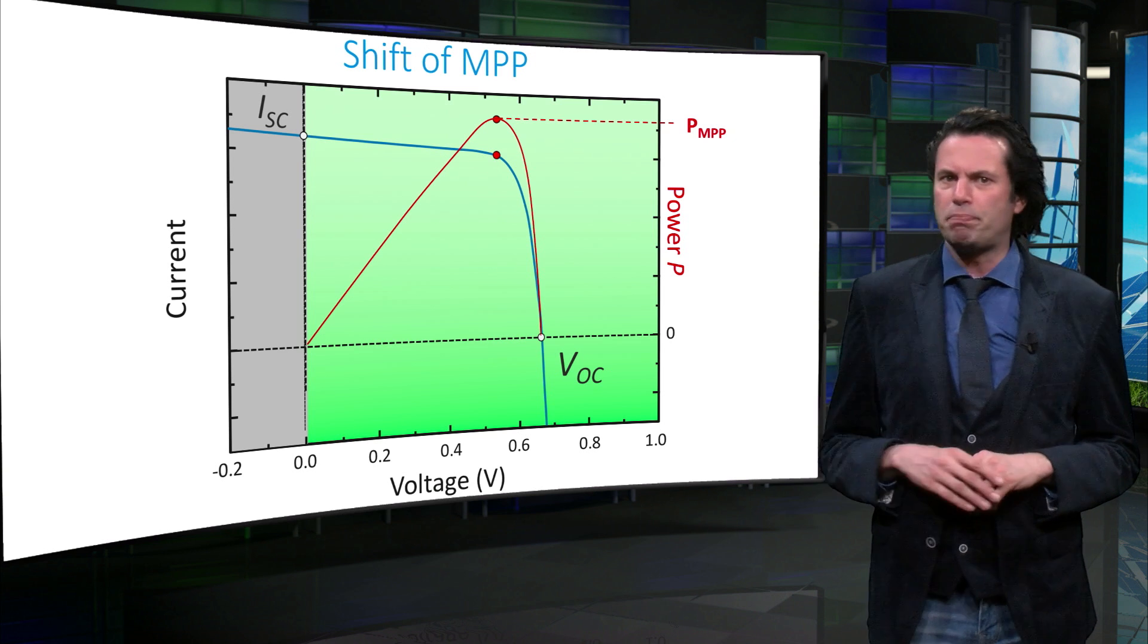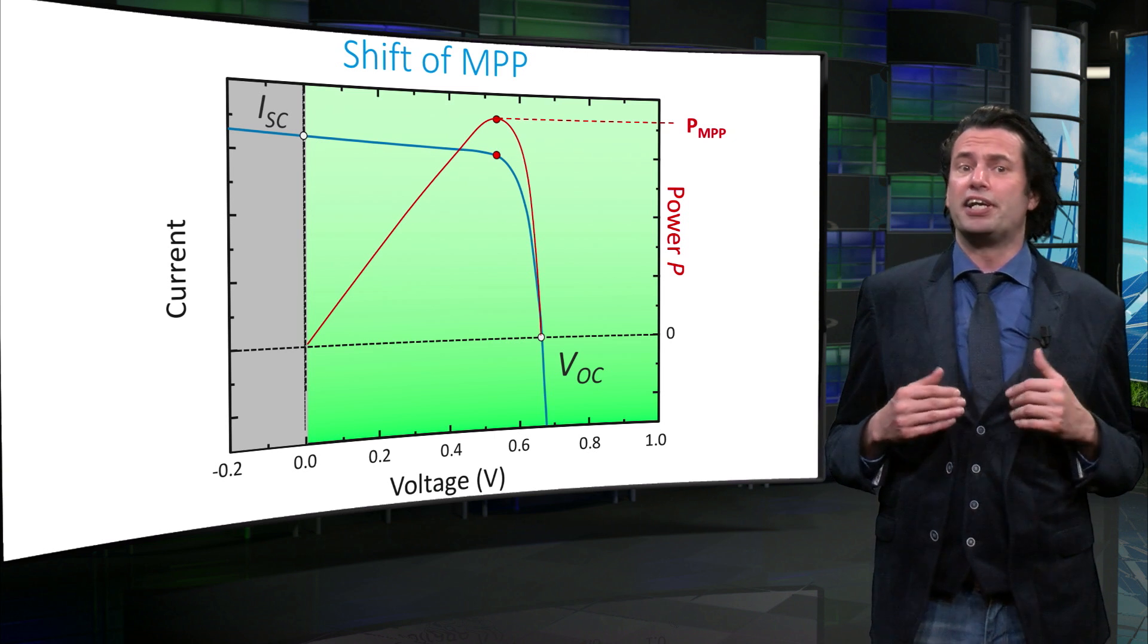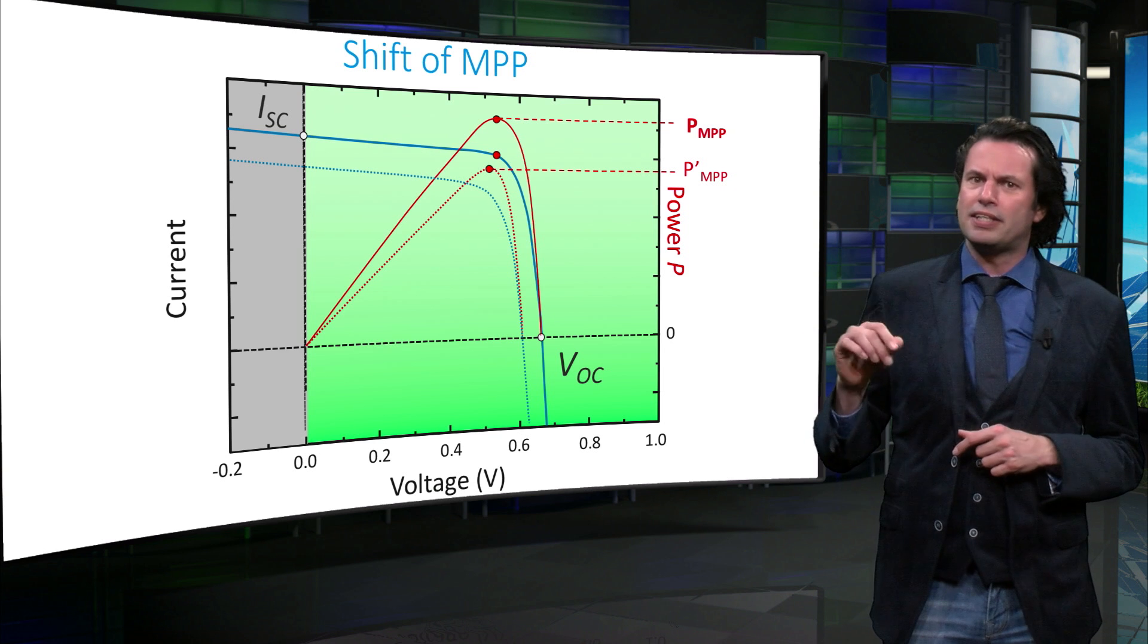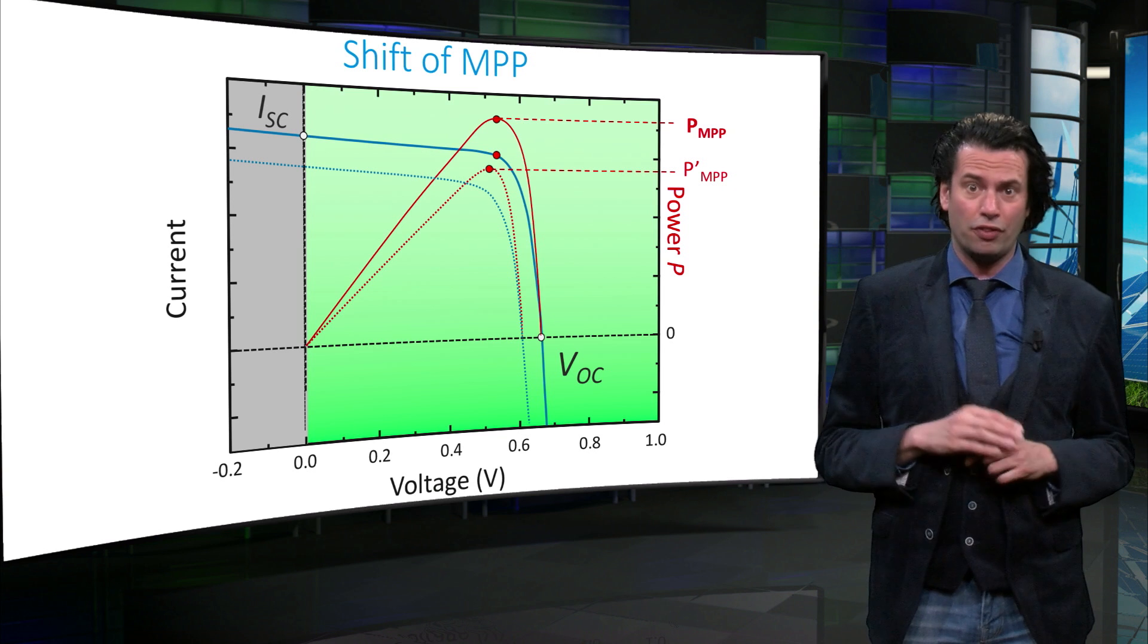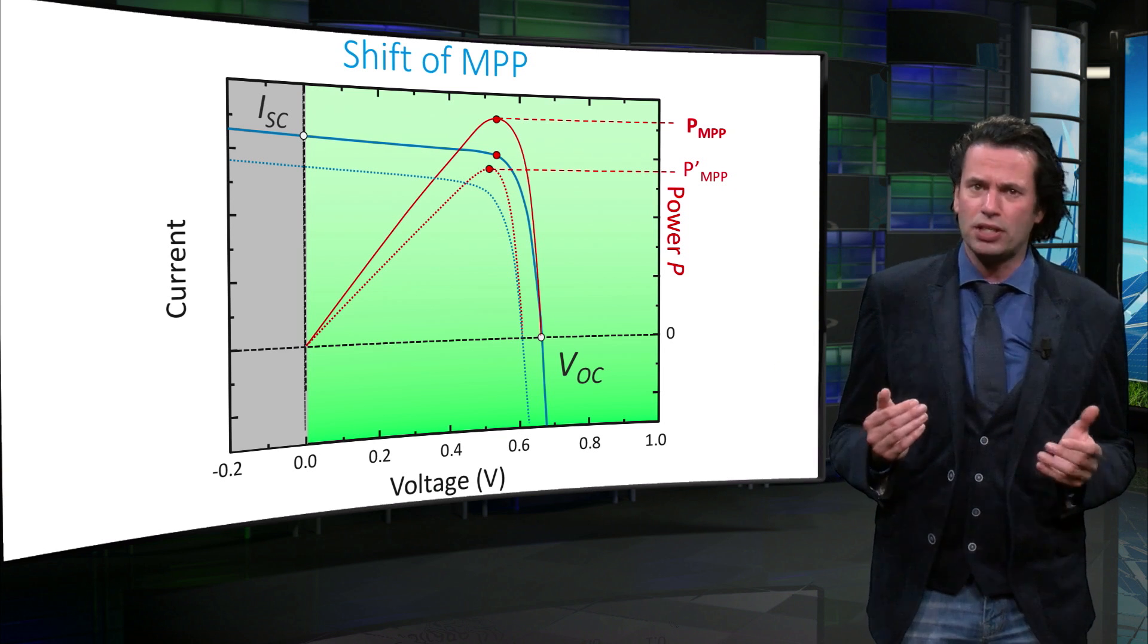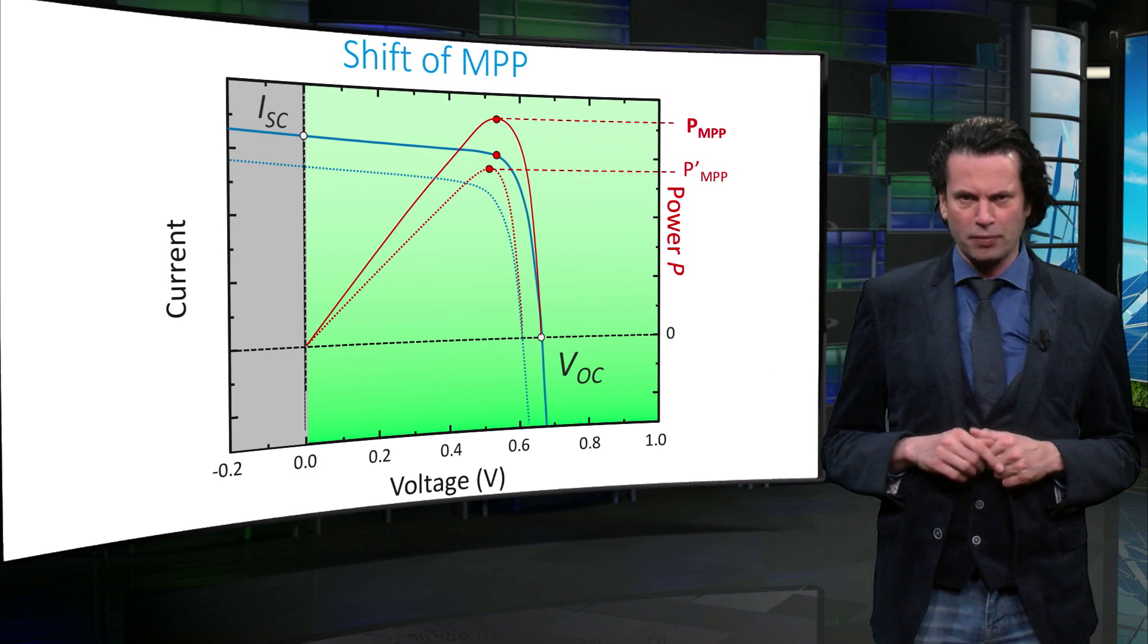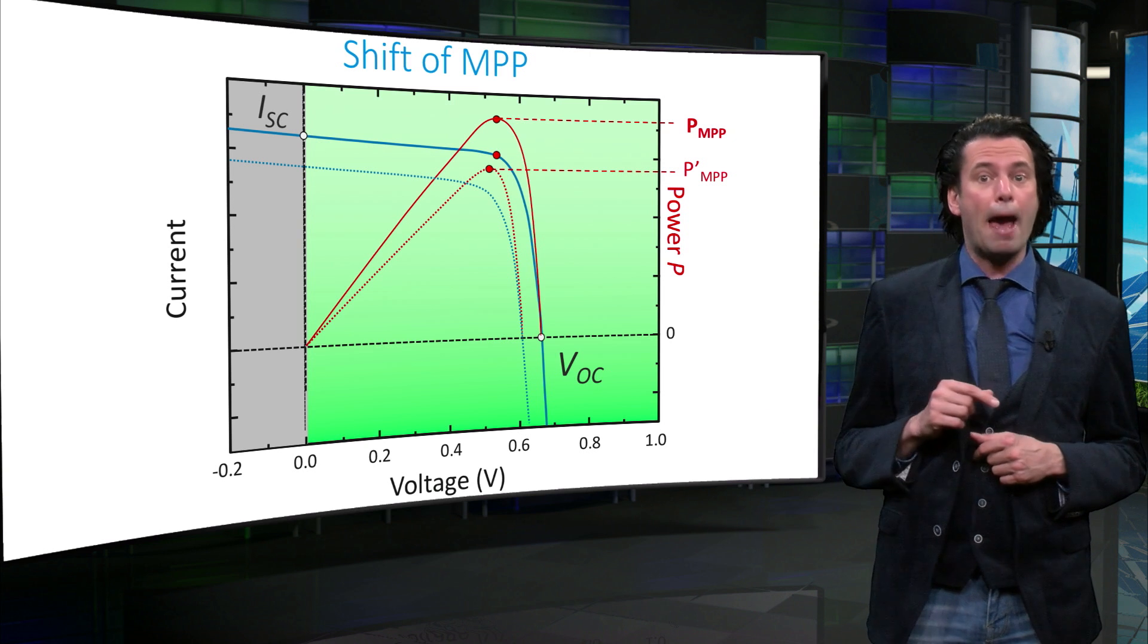But what if, after forcing the PV module to operate at maximum power point, the ambient conditions like irradiance or the temperature change and in turn cause the IV and PV curve to change as well? This would mean that the old maximum power point is no longer valid under these conditions. Thus, to be continuously at the maximum power point at all times, we would need to track any such changes in the IV curve and find out the new maximum power point. This process is called maximum power point tracking or MPPT.